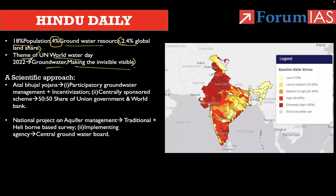In the map, you can see the water stress areas. If the water stress is very high, it should be above 80%. The extremely high regions are prevailing in the desert regions of Rajasthan, the Delhi metro, and the adjacent Gujarat and western UP regions. These are the highly stressed areas in India.